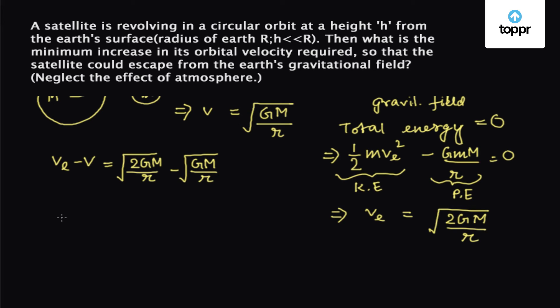We know that small r equals capital R plus h, and in the question it is given that h is much much less than R, so we can neglect h in comparison to R such that small r is almost equal to capital R.